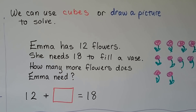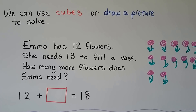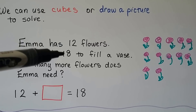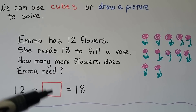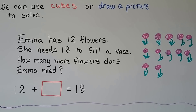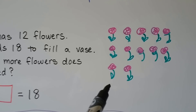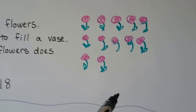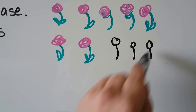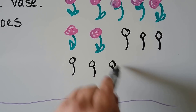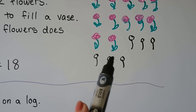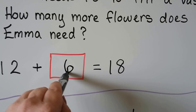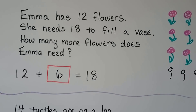We can use cubes or draw a picture to solve: Emma has 12 flowers and needs 18 to fill a vase. How many more flowers does Emma need? She has 12, and we need to add some unknown number to get 18. We draw 12 flowers, then draw more: 13, 14, 15, 16, 17, 18. We drew 6 more flowers, so 12 plus 6 equals 18. We found the unknown amount of flowers she needs to fill her vase.